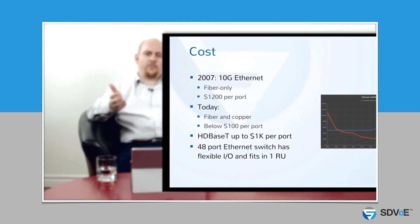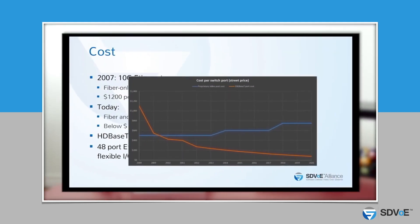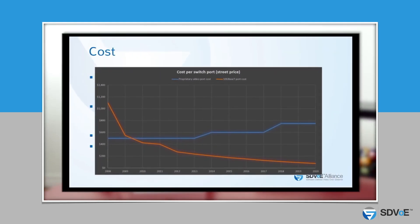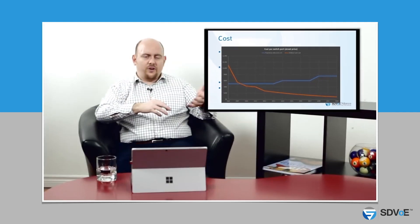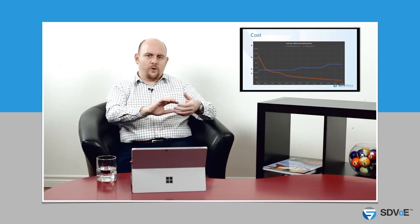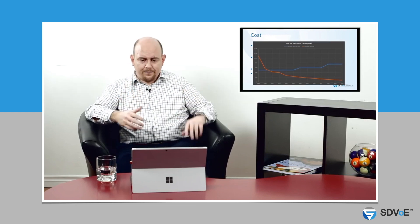And those switches get more expensive over time. It's very expensive for a matrix switch manufacturer to develop a new higher speed product. As we've transitioned from 1080p to 4K to 4K60, the price of matrix switches has been going up. Meanwhile, in that same time, the price of 10 gigabit ethernet is still falling at around 35% a year.